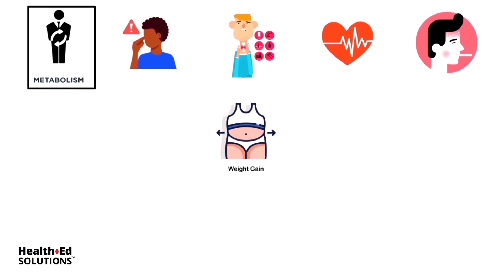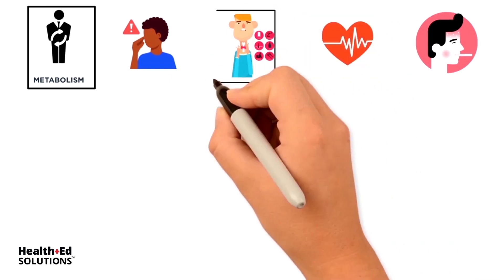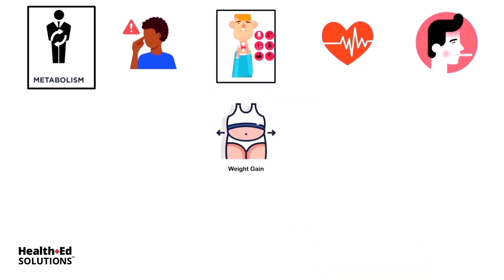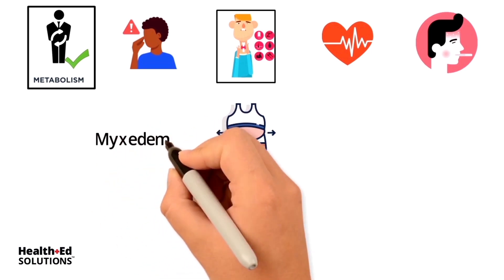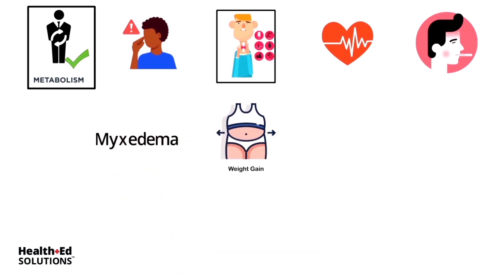You might see some edema, the patient might gain weight, they might be constipated — so everything is hypo and slow. Those are the typical signs and symptoms you would look for in someone with a low metabolic rate.